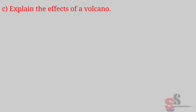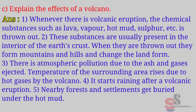C. Explain the effects of a volcano. Answer: Whenever there is a volcanic eruption, chemical substances such as lava, vapor, hot mud, sulfur, etc. are thrown out from the interior of the earth's crust. They form mountains and hills, changing the landform. There is atmospheric pollution due to ash and gases ejected. The temperature of the surrounding area rises due to hot gases. It starts raining after a volcanic eruption. Nearby forests and settlements get buried under hot mud.